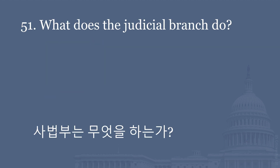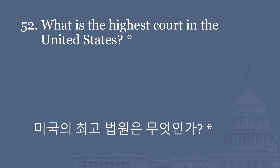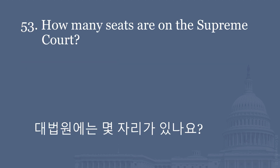What does the Judicial Branch do? Reviews laws. Explains laws. Resolves disputes and disagreements about the law. Decides if a law goes against the U.S. Constitution. What is the highest court in the United States? Supreme Court. How many seats are on the Supreme Court? Nine.